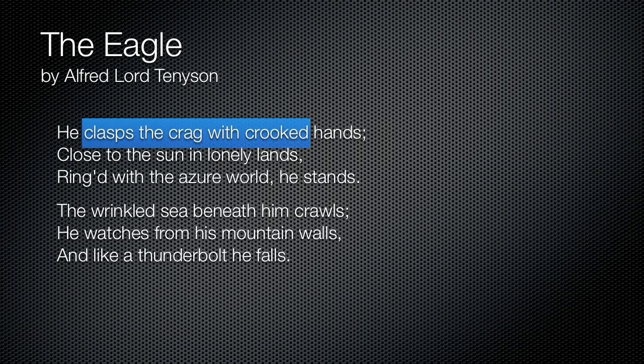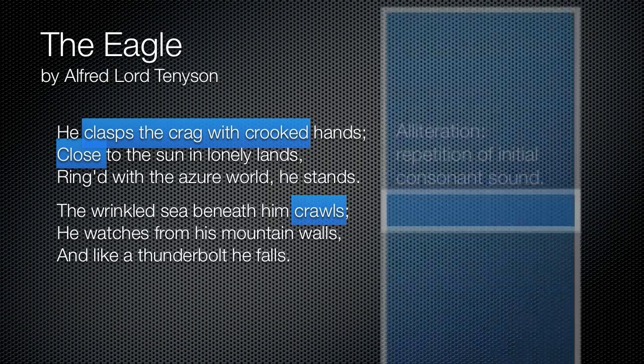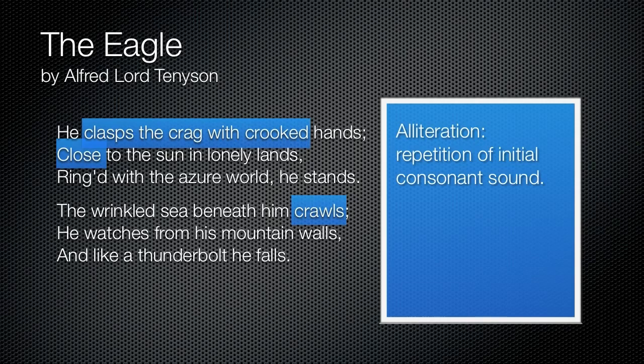"He clasps the crag with crooked hands" — that C sound, along with close and crawls, is what we call alliteration: the repetition of initial consonant sounds. We also see this with lonely lands. So we have the C sound: clasp, crag, crooked, close, crawls, lonely lands. Poetry isn't just about the words that end the line — it has a lot to do with the words inside the lines as well. We also see alliteration with the W sound in world, watches, and walls.